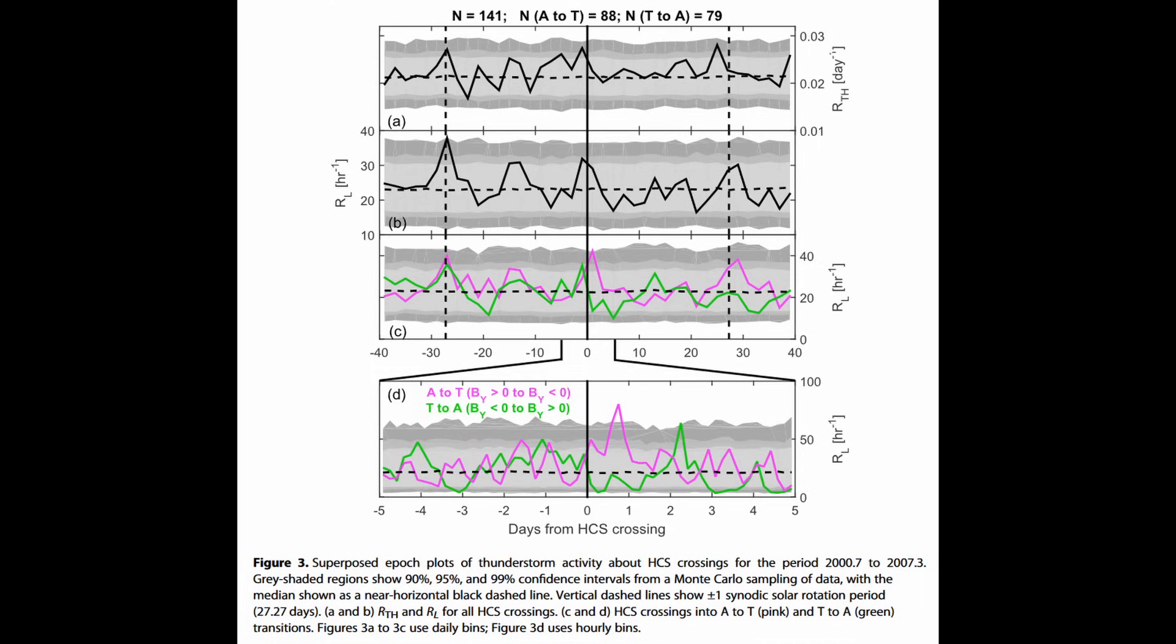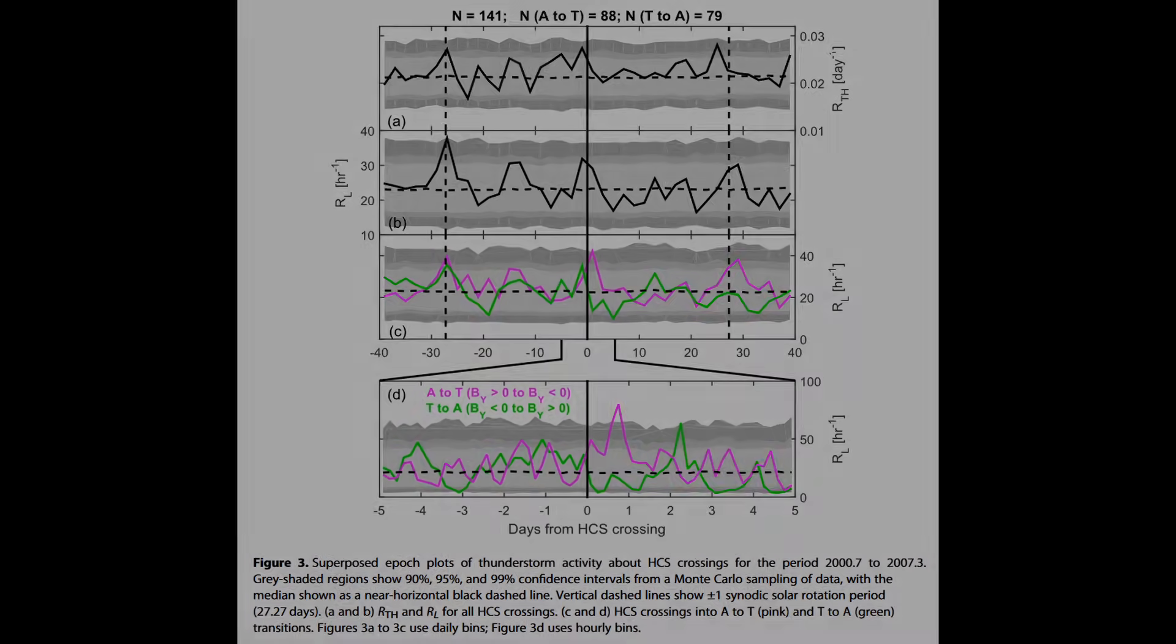Remarkably, their analysis led to the discovery that thunderstorms tended to reach their peak activity within one to two days following each passage of the heliospheric current sheet.